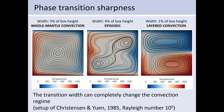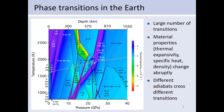This means it is really important to model thin phase transitions accurately. And if we look at the real mantle, this problem becomes more complex than just having one phase transition. This diagram shows phase transitions for a pyrolytic composition of mantle — there are many different phases, with a range of Clapeyron slopes, and material properties like density, thermal expansivity, and specific heat jump abruptly at these phase transitions.